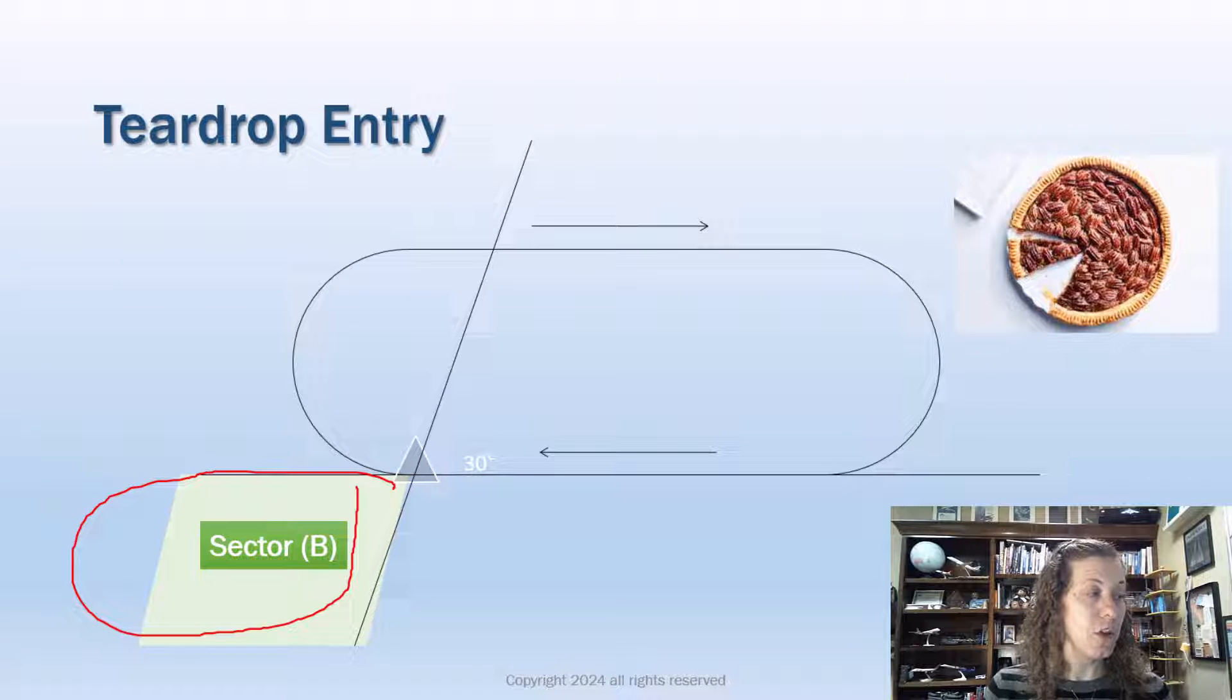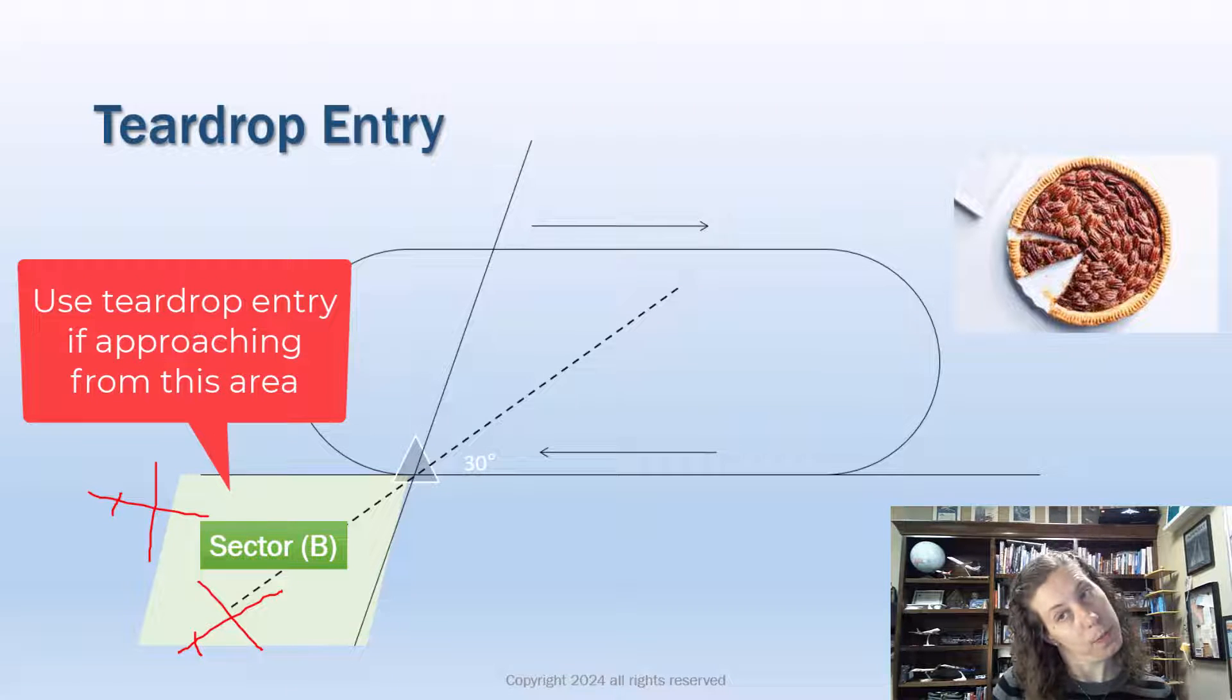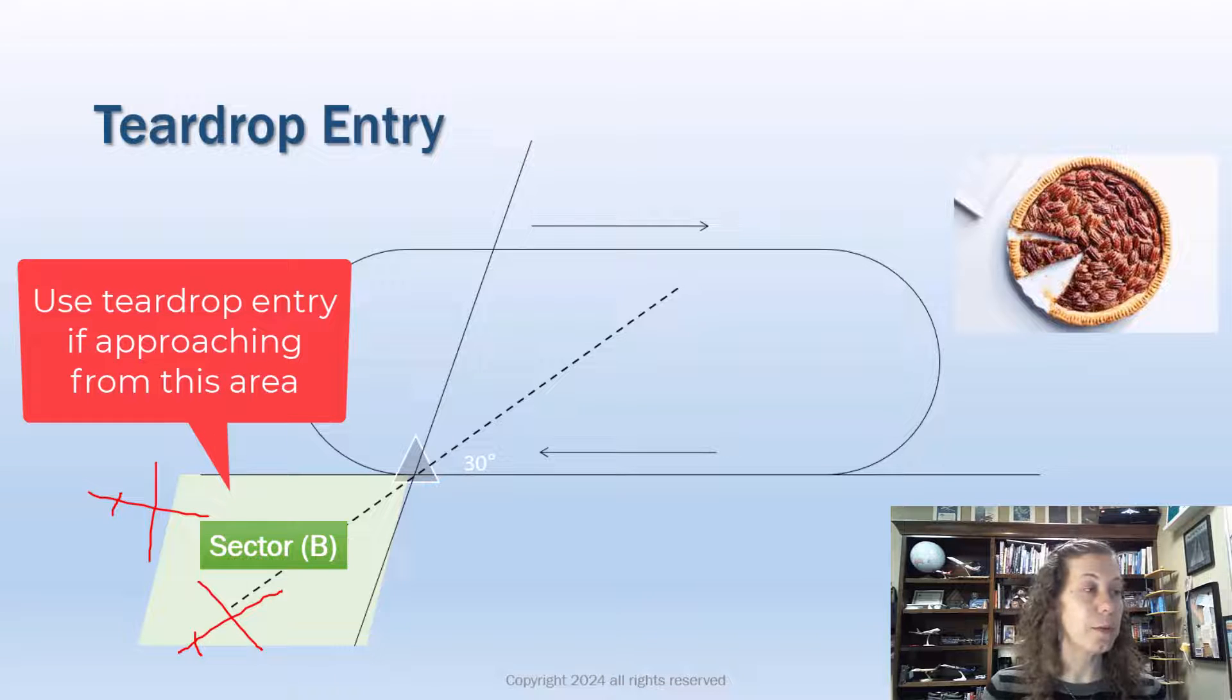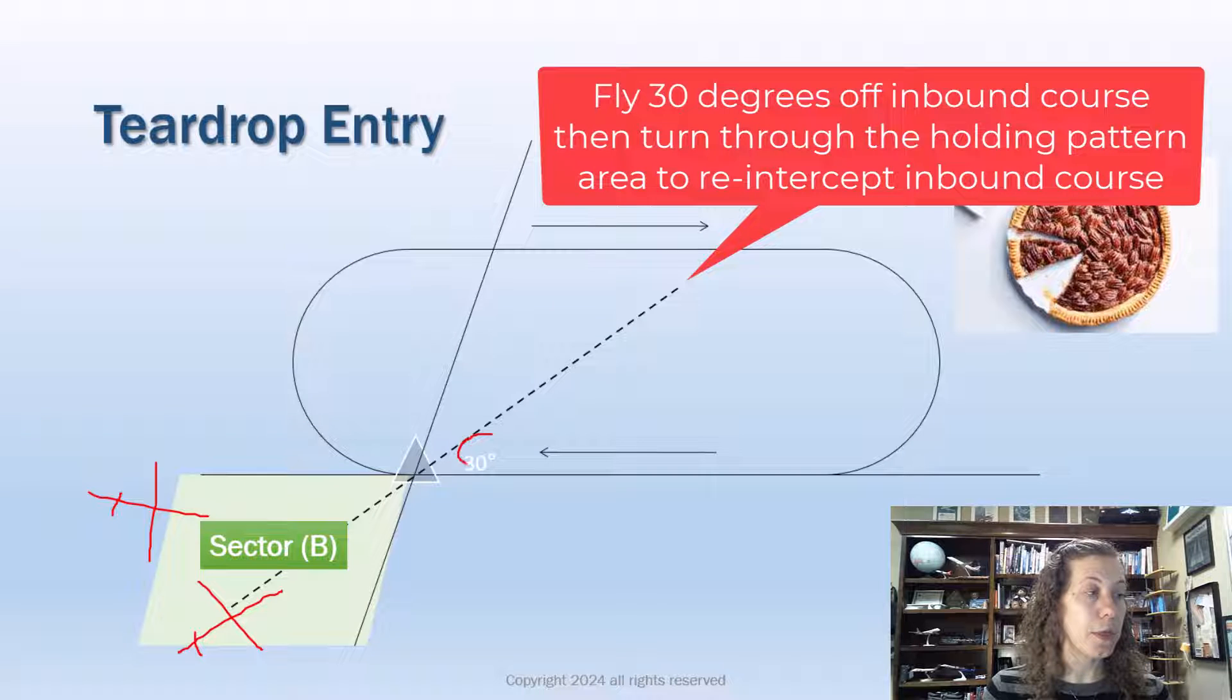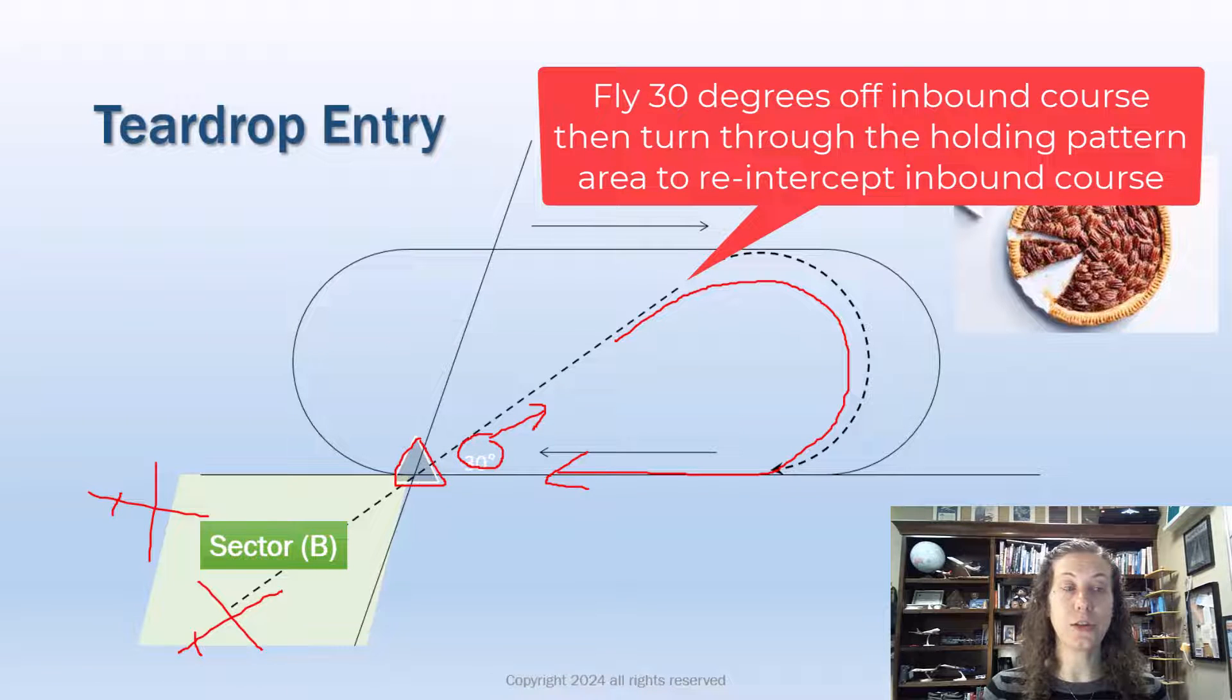If our aircraft is approaching from anywhere in this area down here, we are coming in from the teardrop side, and we call it a teardrop also because of the direction my airplane flies when doing the entry. So we're going to fly at about a 30-degree angle off of my inbound leg, and then I am going to turn the airplane back around and fly inbound to the fix, which produces that teardrop shape. That is a teardrop entry.